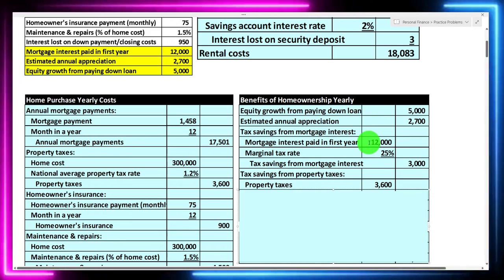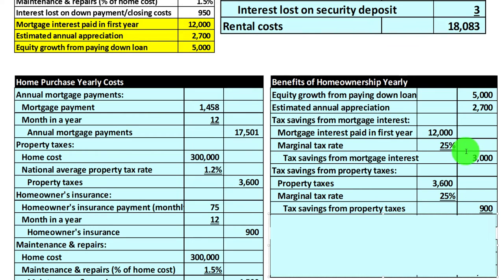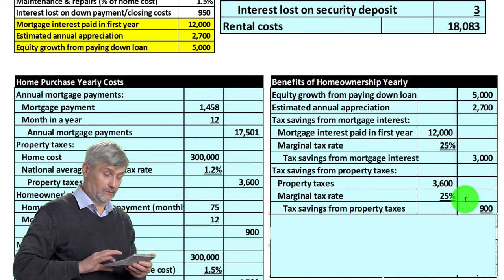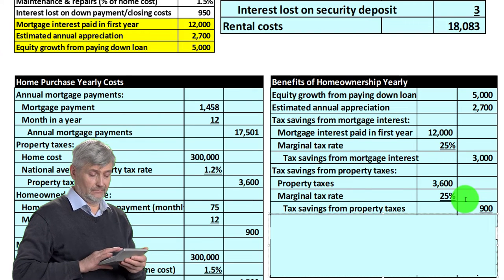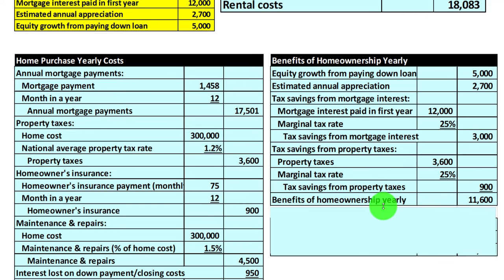This tax benefit will also change over time as mortgage interest decreases. Property taxes are another major item pushing people from standard to itemized deduction, but how much actual benefit you get depends on how far over the standard deduction you land. Also note that tax code uncertainty — changes to the standard deduction or caps on state taxes — is something to consider, especially in high-tax states like California or New York.